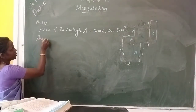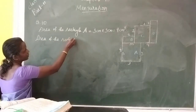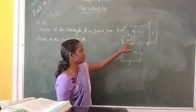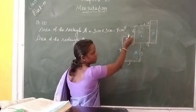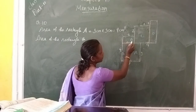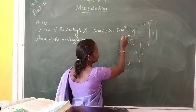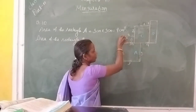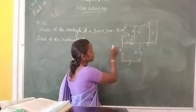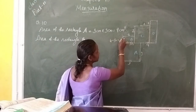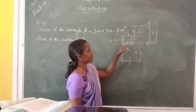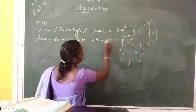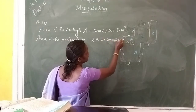Next, find out the area of rectangle B. This is rectangle B. Its length is 2 centimeters — the opposite side is also 2 centimeters. For the breadth, the total length is 4, and this distance is 3 centimeters, so 4 minus 3 equals 1. This distance is 1 centimeter. So, area of rectangle B = 2 multiplied by 1 equals 2 centimeters square.